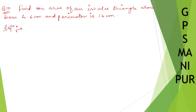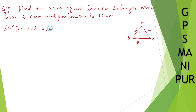We need to find the area of an isosceles triangle whose base is 6 cm and perimeter is 16 cm. It is an isosceles triangle, so let us name it ABC and give the sides small a, small b, small c. Let C be the base. Let A, B, and C be the sides of the isosceles triangle.